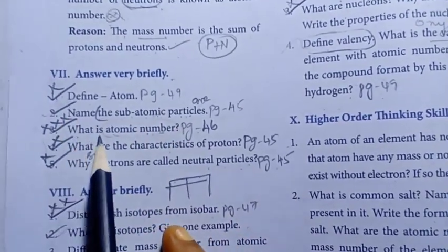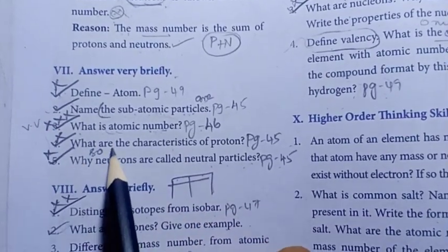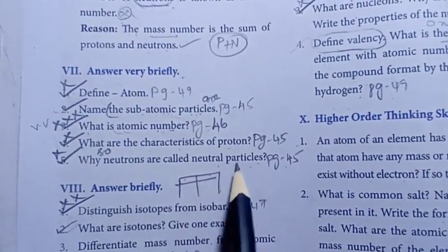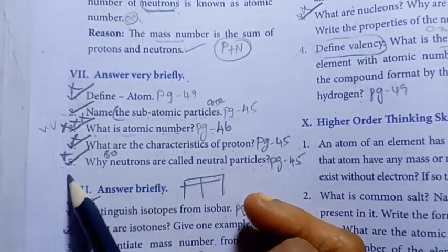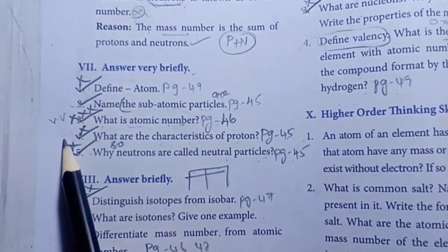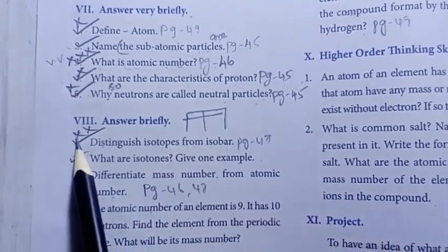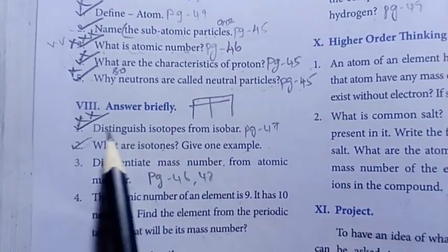What are the characteristics of proton? Important. Why are neutrons called neutral particles? Important question, repeated. Answer briefly: distinguish isotopes from isobar. That's important. What are isotones? Give one example. Important question.